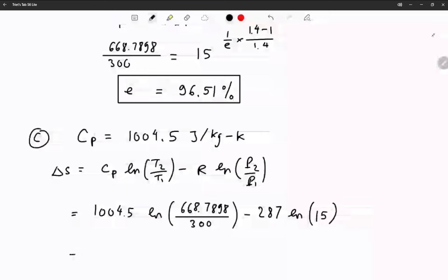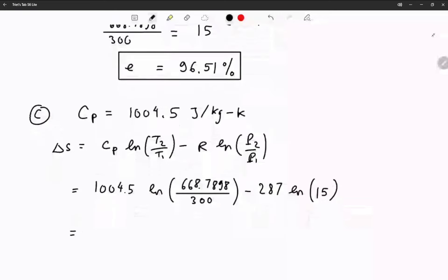Using your calculator, you're gonna get 28.0845, and the unit's gonna be joules per kilogram K, the same as cp. And that's gonna be delta S.